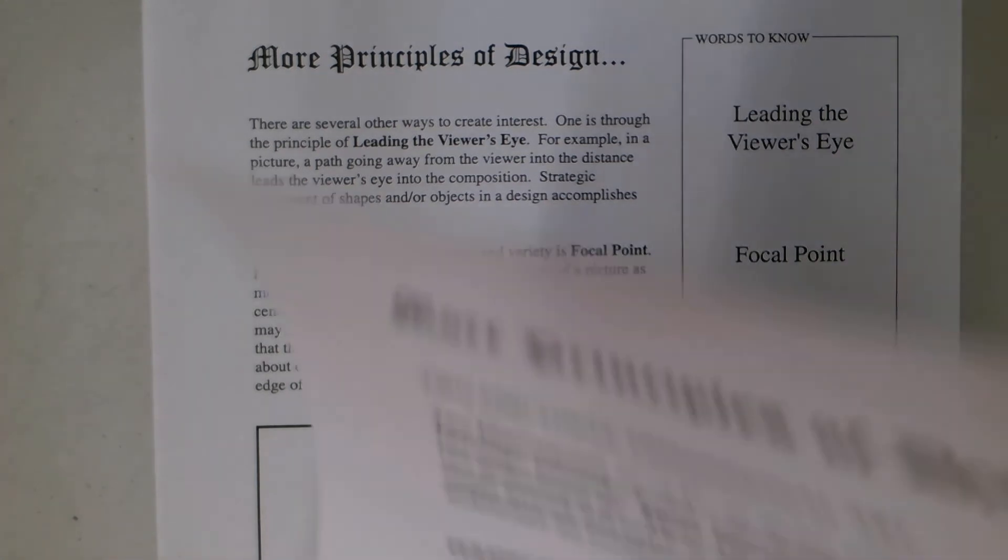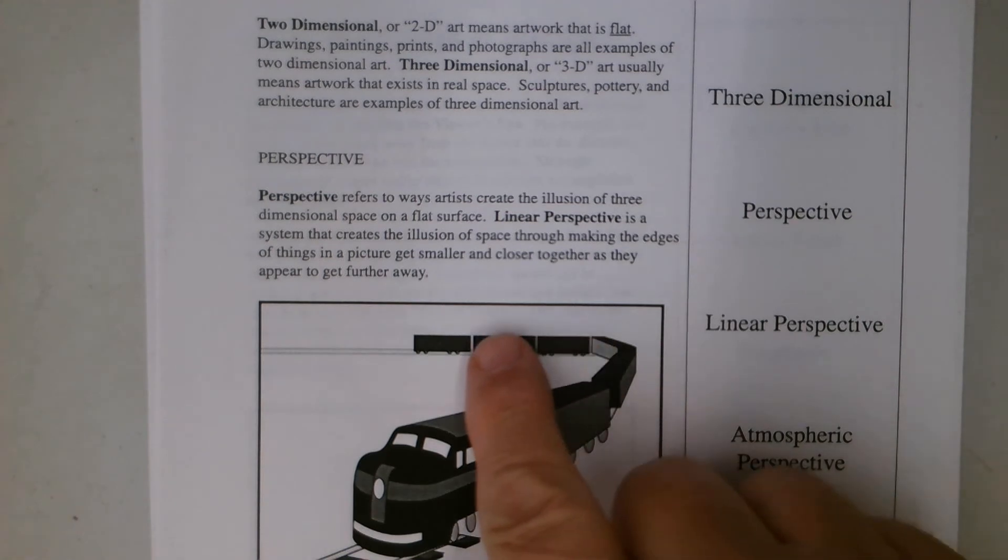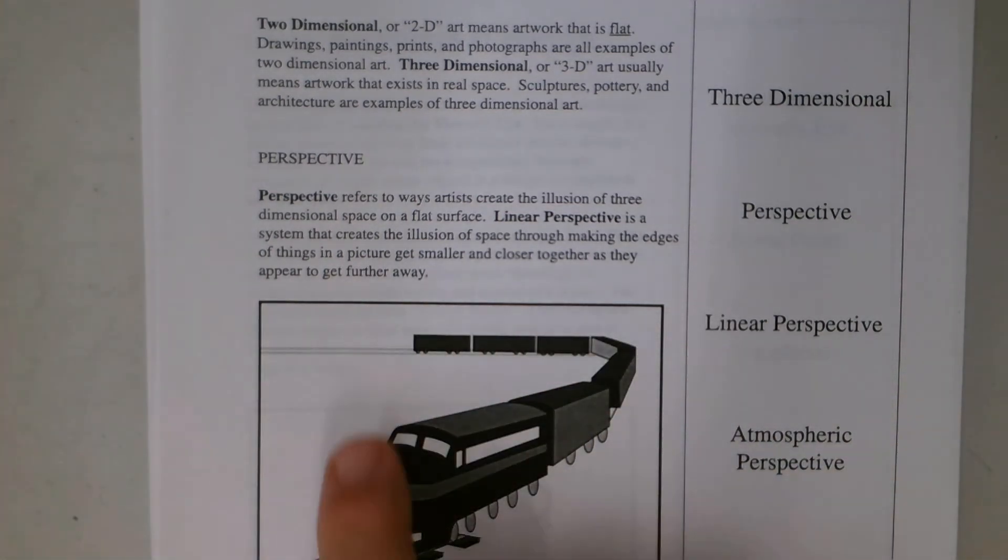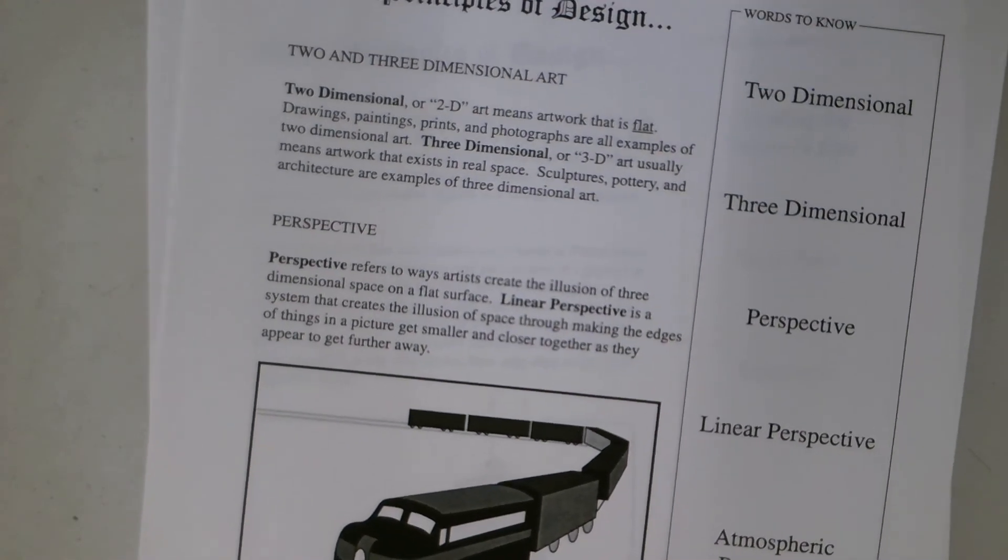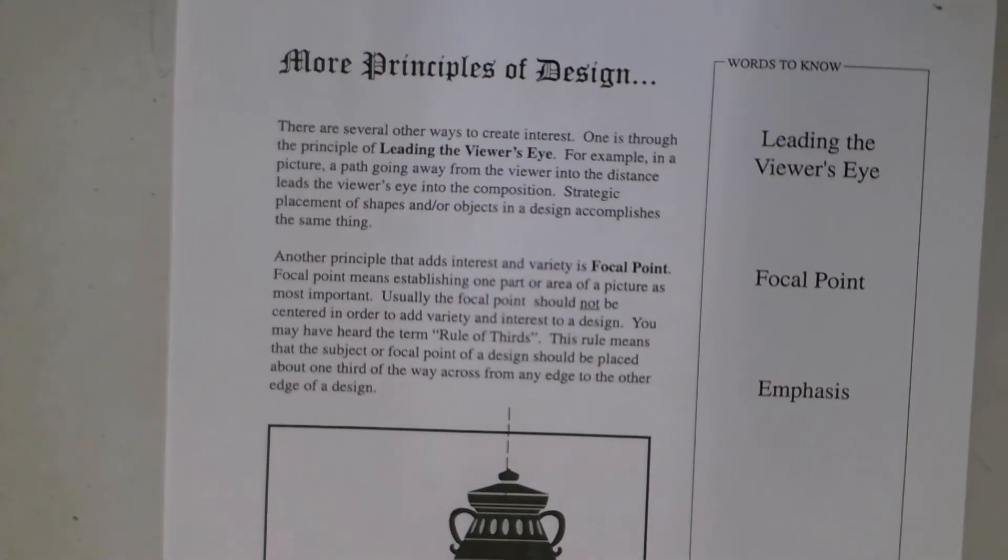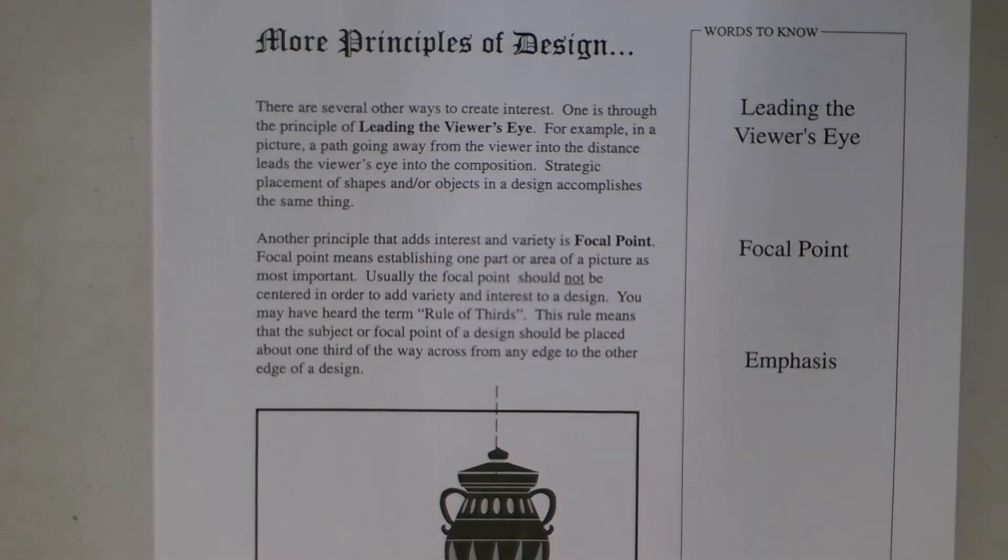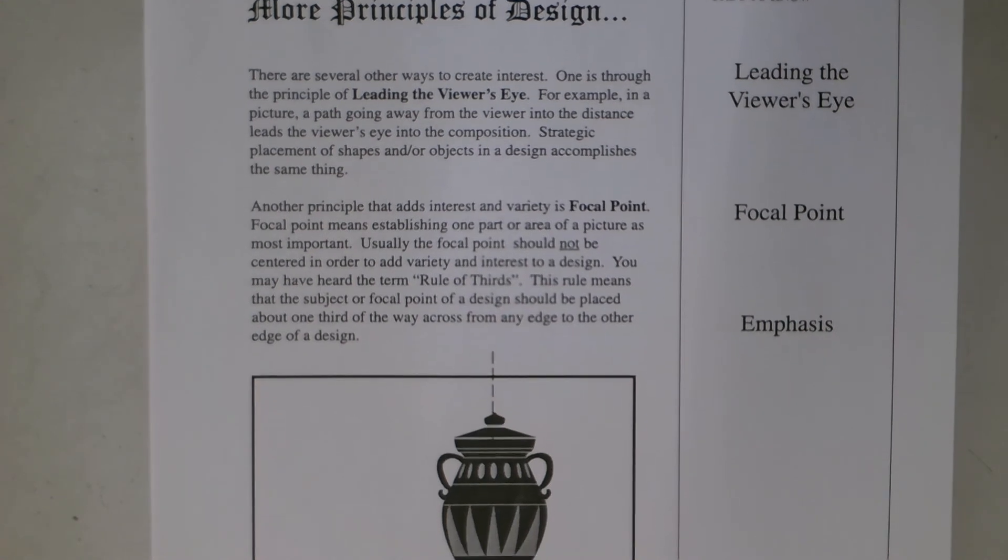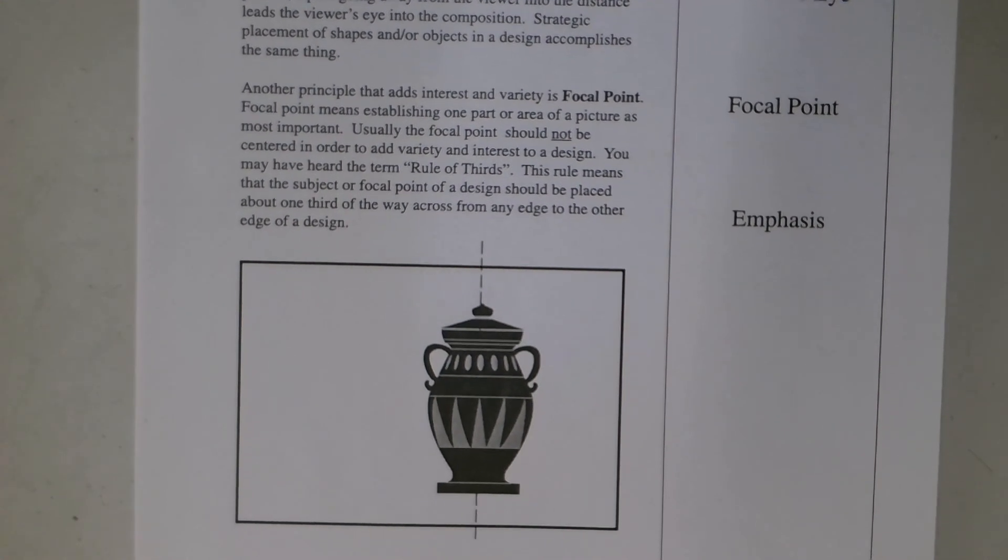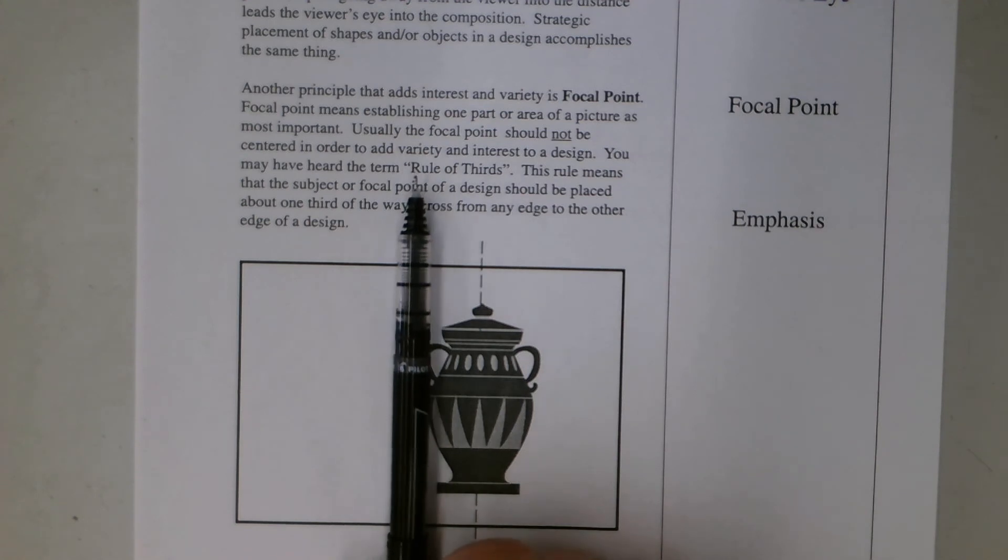So when we talk about that, here is a picture of a train and it's going off into the distance, and it leads your eye across other areas of your composition so that everything is important. We're using those techniques. Another principle to add interest and variety is a focal point. Focal point means establishing one part of the area of a picture as most important. Usually the focal point should not be centered in order to add variety and interest to the design. You may have heard of the rule of thirds. This rule means that the subject or focal point of the design should be placed about one third of the way across from the edge of the paper.